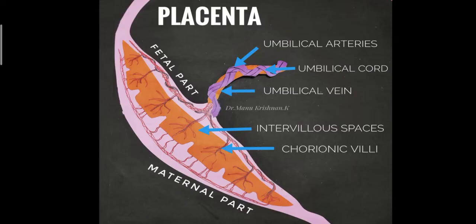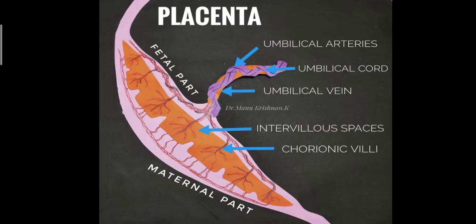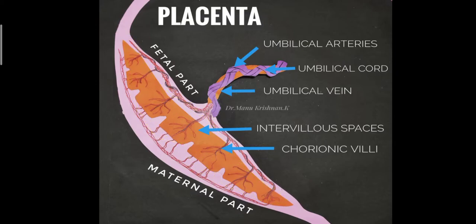In the previous class about the fetal circulation, we have seen how important the placenta is for the development of the fetus. It has a fetal part and a maternal part, and the placenta is connected to the baby or fetus by the umbilical cord. The exchange of materials happens within the intervillus spaces where chorionic villi project and are responsible for the transfer of materials from the mother to the fetus. So let's have a look at how this placenta is developed.